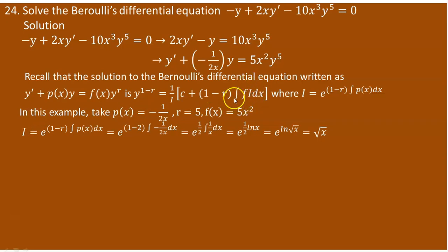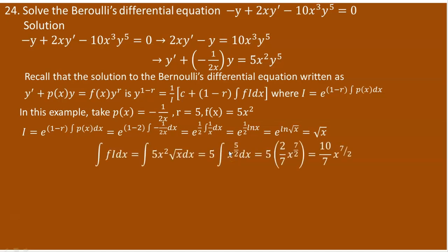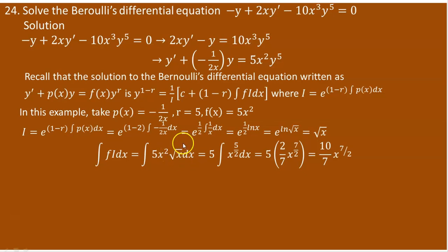Now we need to determine the integral of f·I. Since f equals 5x squared and I equals the square root of x, we compute the integral of 5x squared times the square root of x dx. The 5 can be taken out. Since the square root of x is x to the power of 1/2, we add the exponents: 2 plus 1/2 equals 5/2, giving 5 times the integral of x to the power of 5/2 dx.